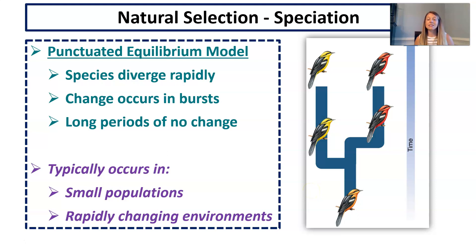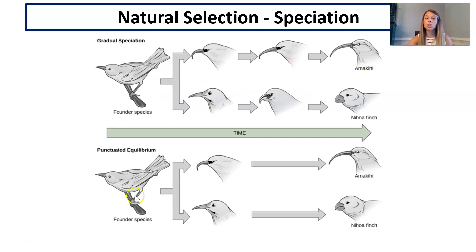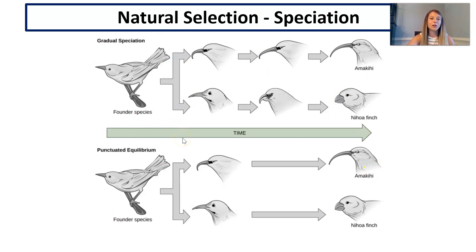Punctuated equilibrium says that species diverge very rapidly — change occurs in bursts followed by long periods of no change. This typically occurs in small populations with rapidly changing environments: some environmental event causes a huge burst of change in the population, then a long period with no change. We used to think species changed either gradually with slow intermediate forms, or rapidly due to events like droughts or floods. But now we realize it's probably both happening all the time — a little gradualism, then punctuated equilibrium, then more gradualism.